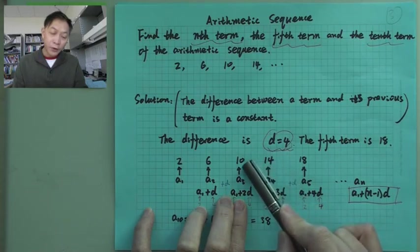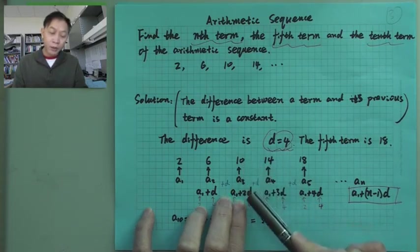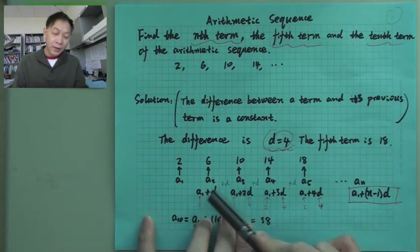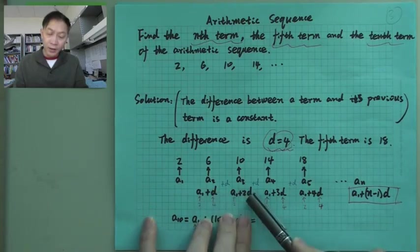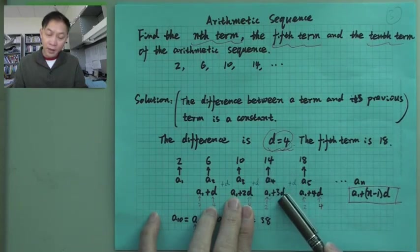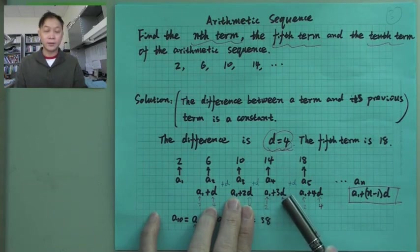Now for the fourth term, it's actually... you add 4 to the third term. But we know the third term is already A1 plus 2D, and the second term is A1 plus 1D. So the fourth term will be A1 plus 3 Ds. 3 Ds.